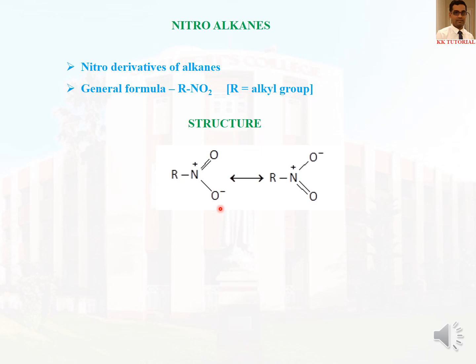We know how to draw resonance structures. This is one canonical structure, and the electrons move to form a double bond here. When the double bond comes here, these electrons will move to oxygen, drawn with an arrow mark, so it becomes O minus. These are the two resonating structures of nitroalkane. This is evident from the fact that the two N-O bonds in nitroalkanes are equivalent, having a bond length of 122 picometers — proof for the existence of resonance.